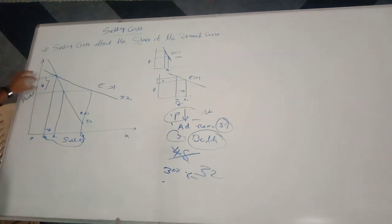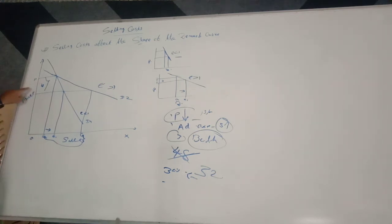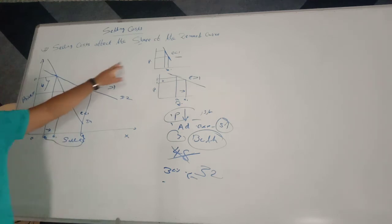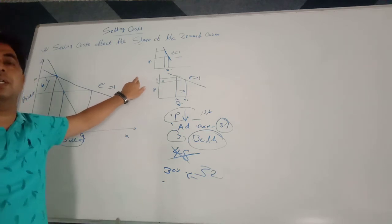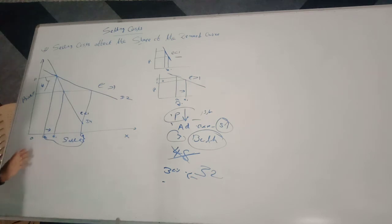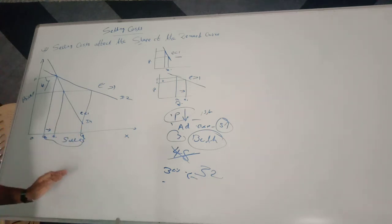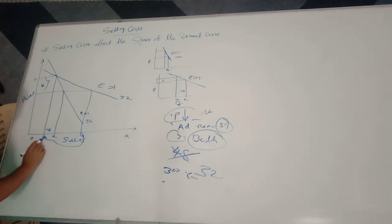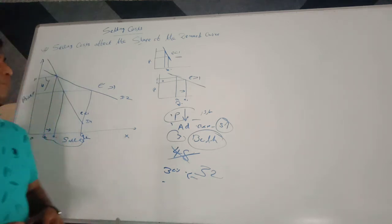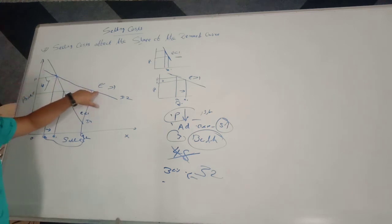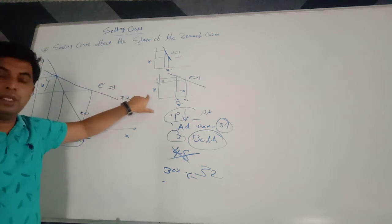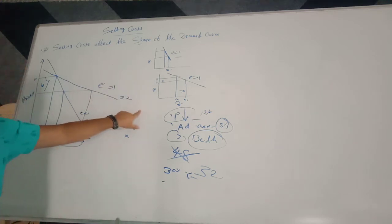To repeat: the original price was OP and original sales of the firm were OQ. When the firm reduced price from OP to OP1 using only one alternative, the increase in demand was from OQ to OQ1 — an example of relatively inelastic demand where the proportionate change in demand is less than the proportionate change in price, so elasticity is less than one. But when the firm also incurs selling costs along with price reduction, the increase in sales is significantly larger, from Q2 to Q3, and elasticity becomes greater than one — relatively elastic.